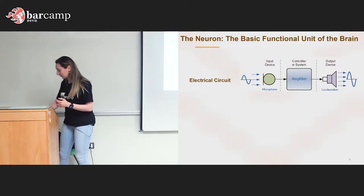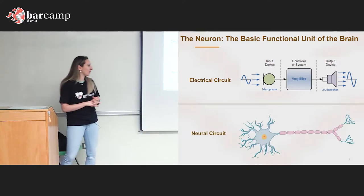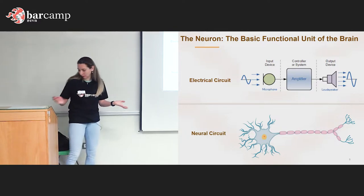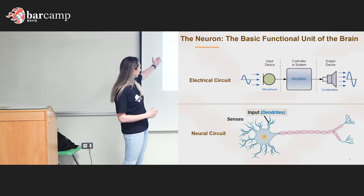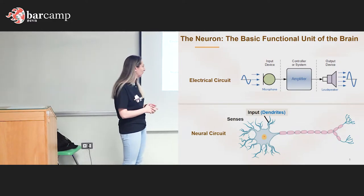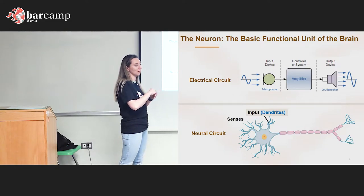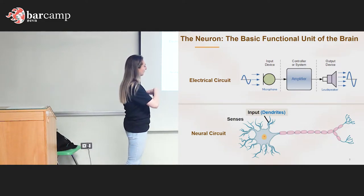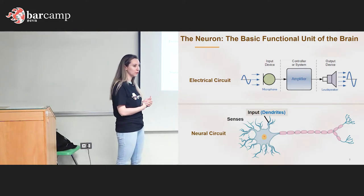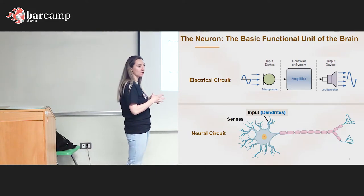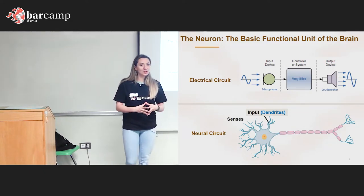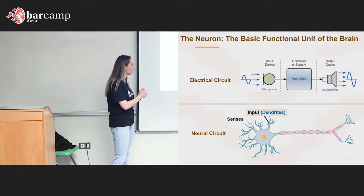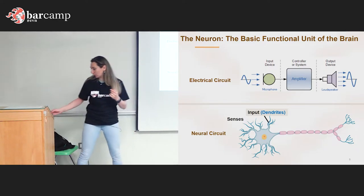The basic unit of the neural system is a neuron — it forms the neural circuit of the nervous system. It has an input like a microphone, but unlike that simple example with only one input, neurons can have hundreds or thousands of inputs depending on their type, meaning they make connections to different neurons, making the input much more complicated than a simple linear one.